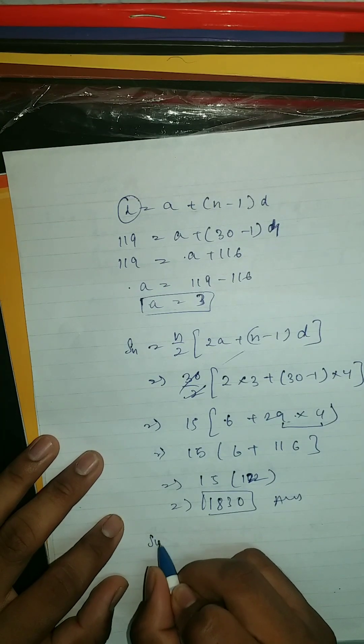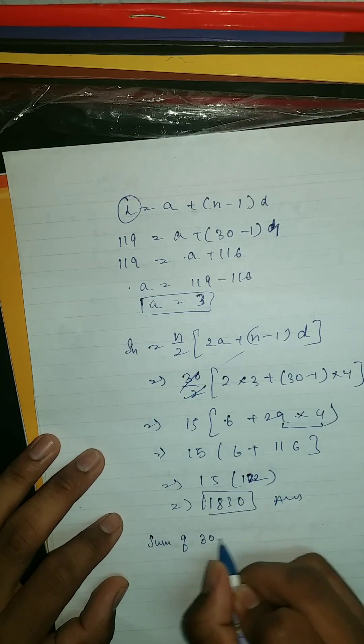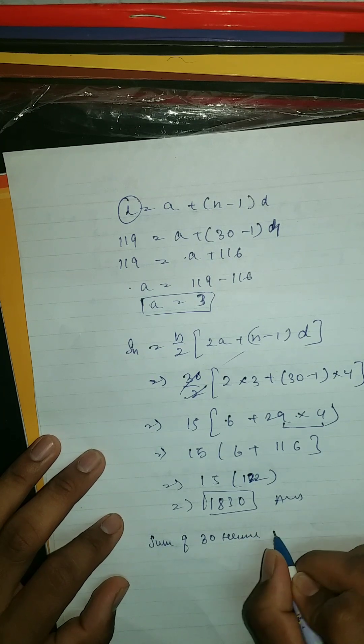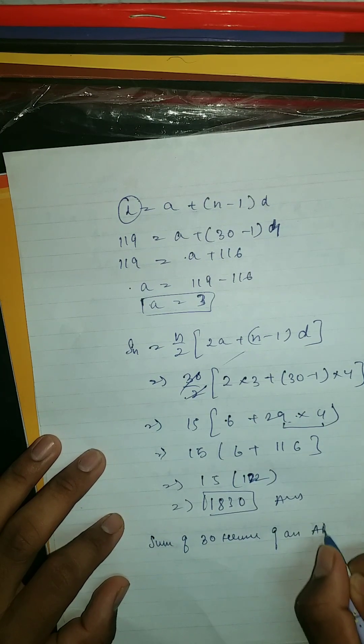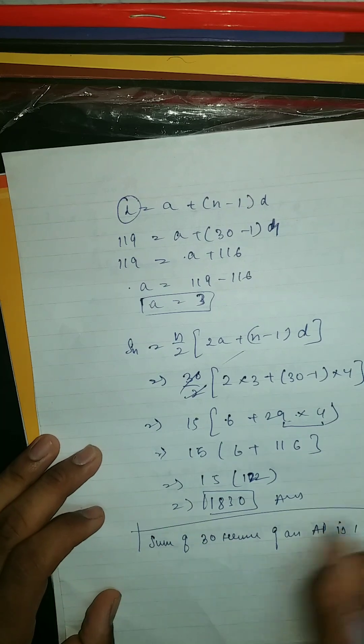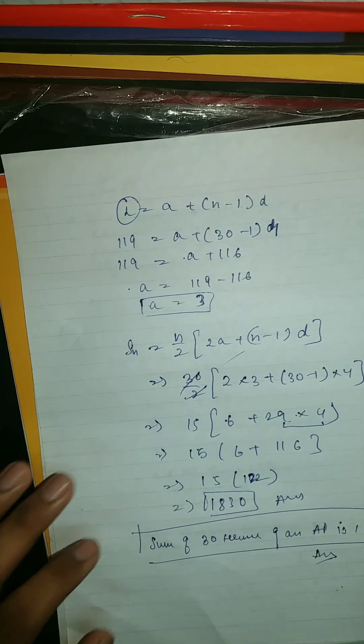And this should be 1830. So the sum of 30 terms of the AP is 1830, which is our answer.